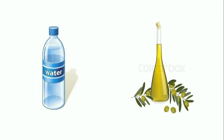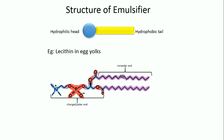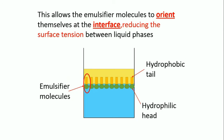Generally speaking, emulsifier is known as the binding agent of water and oil. It has a hydrophilic head which dissolves in water and hydrophobic tail which dissolves in oil. This allows them to orient themselves at the interface, reducing the surface tension between liquid phases.